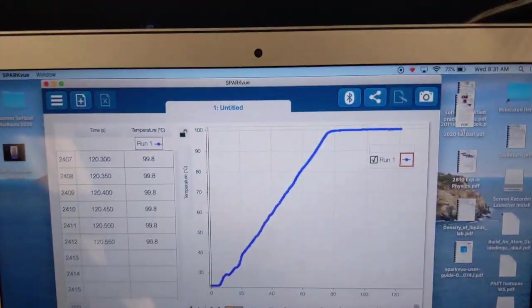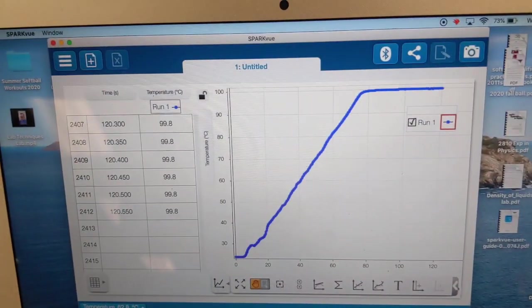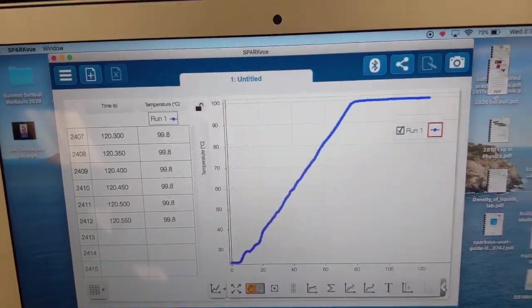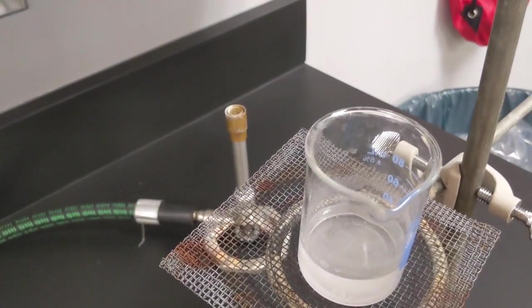So we finished up. Here's our data. There's the 120 seconds and there's our temperature. And then there's our graph. And you can see how quickly this thing heated up. We've turned the flame off. We've removed the thermometer out of the water and let the water sit here.